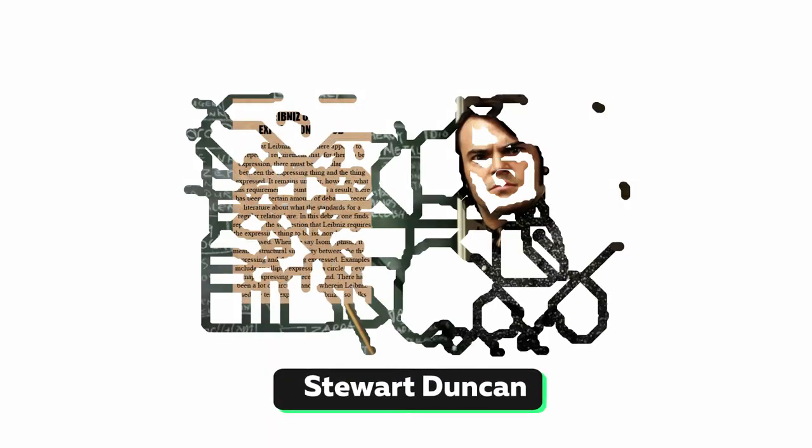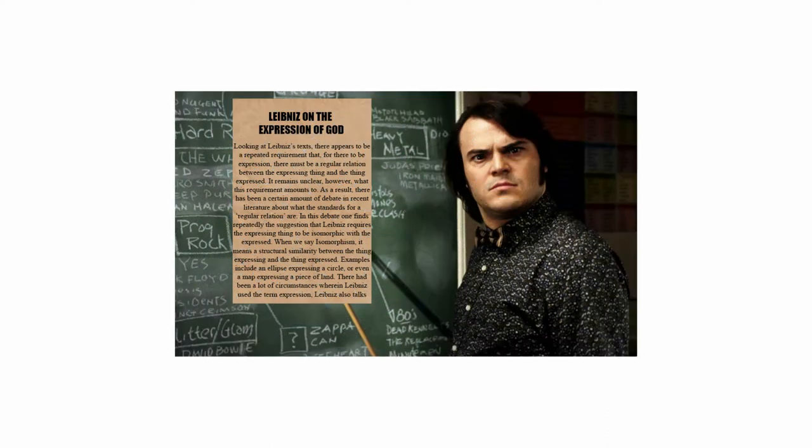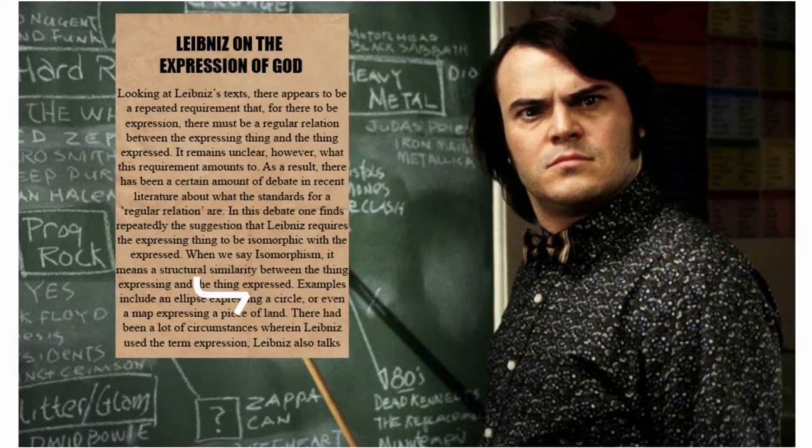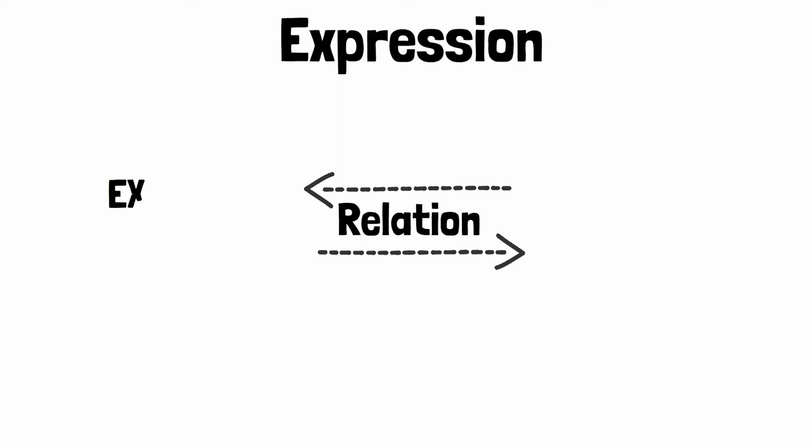Stuart Duncan, in his paper Leibniz on the Expression of God, tried to shed some light for us to understand the mystery behind the word expression in Leibniz's language. Looking at Leibniz's texts, there appears to be a repeated requirement that, for there to be expression, there must be a regular relation between the expressing thing and the thing expressed.